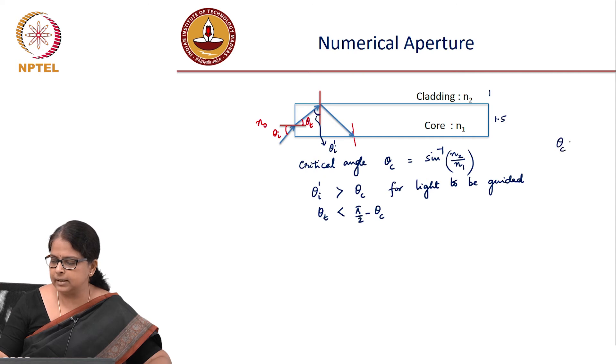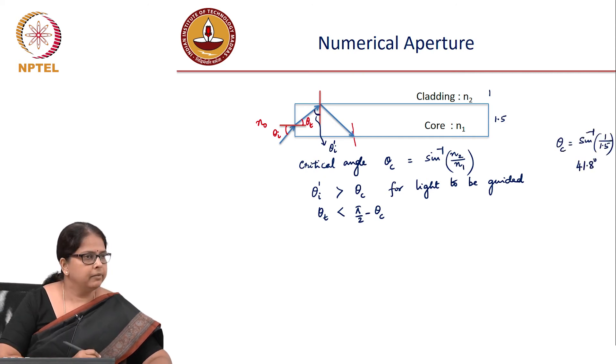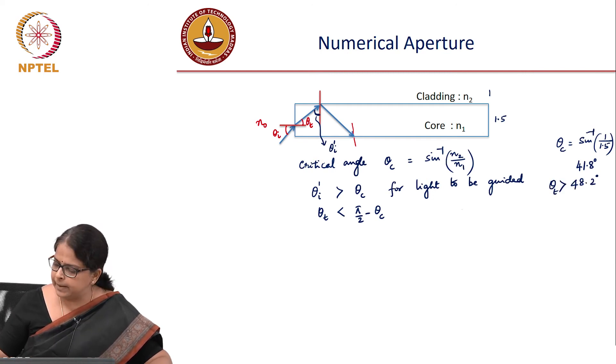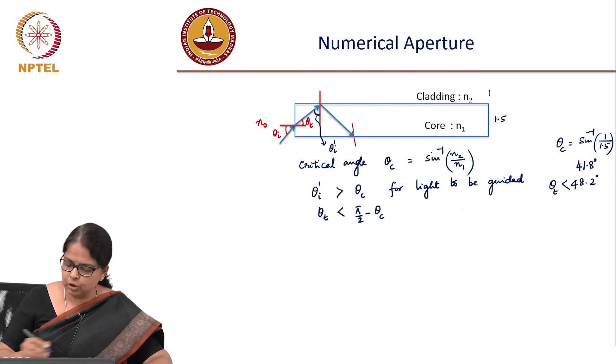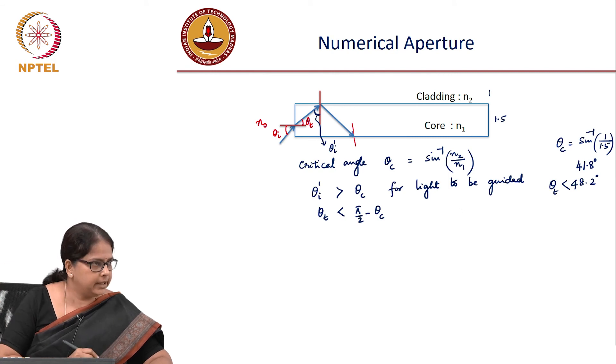41.8 degrees. This means θᵢ' should always be greater than 41.8 degrees, which means θₜ must be less than 48.2 degrees, so that you can have guidance.